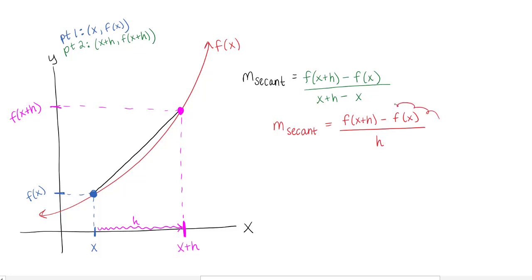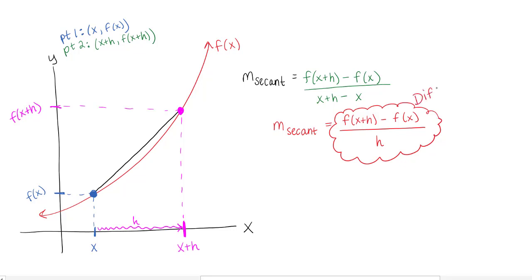This should be something familiar from a pre-calc course — any class you took before calculus. This is called the difference quotient. You probably worked with this formula and simplified a whole bunch of functions, putting them into this form and then dividing the h out. But this is actually what it means: you're finding the average rate of change.